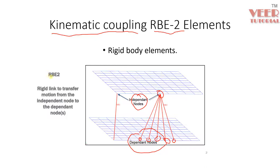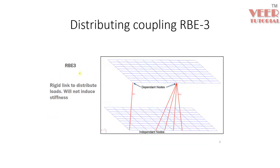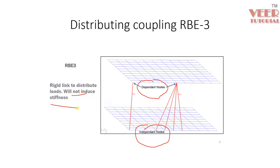This is one of the frequently used types of elements. In the case of Distributed Coupling, the single node is called the dependent node, and the distributed or multiple nodes are called the independent nodes. The distributed nodes will not induce additional stiffness.